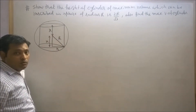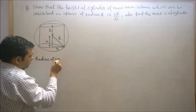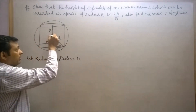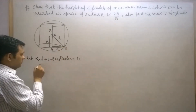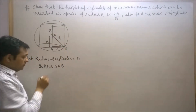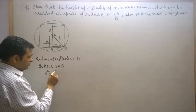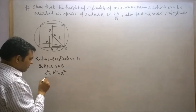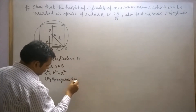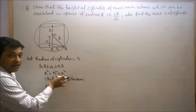Since x plus x equals 2x, the radius of cylinder is equal to small r. Now, in right triangle OAB, by Pythagoras theorem, capital R squared equals small r squared plus x squared. Therefore, small r squared equals capital R squared minus x squared.